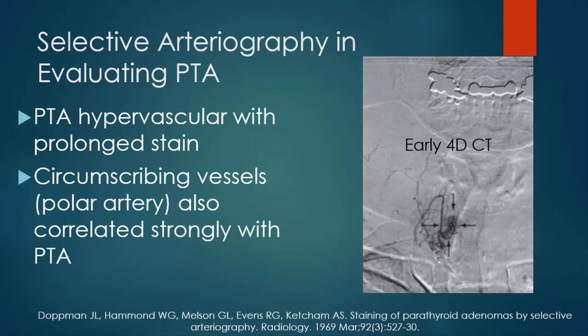Selective arteriography was performed early on to evaluate parathyroid adenomas. Parathyroid adenomas were hypervascular with a prolonged stain and a circumscribing polar artery that correlated strongly with the presence of a parathyroid adenoma. This early angiographic approach is essentially our early 4D CT study.